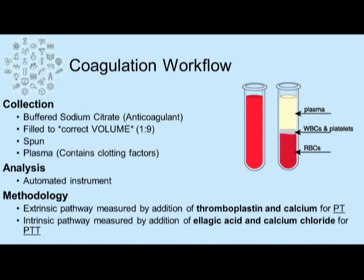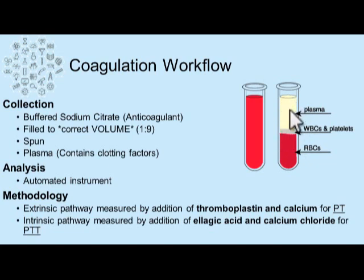Coagulation is going to use a different tube. In the coagulation department, we run samples off a buffered sodium citrate tube. This is also an anticoagulant, but it needs to be filled to the correct volume with a one-to-nine ratio of buffered sodium citrate to patient blood. The sample is then spun down and the liquid portion is separated from the cellular portion. Because this sample has been introduced to an anticoagulant, the clotting factors are still present — and that's what we're testing for. We want those clotting factors present in the upper liquid portion, and that gives us plasma.